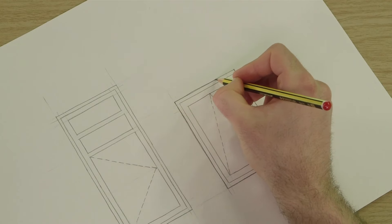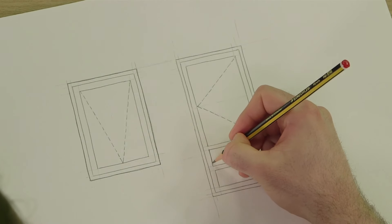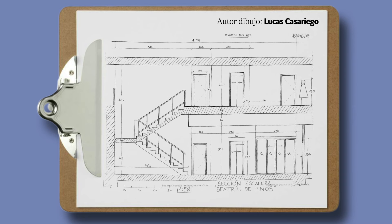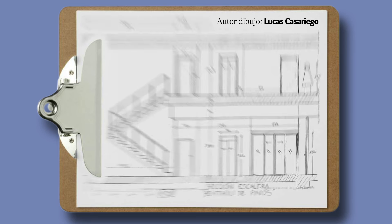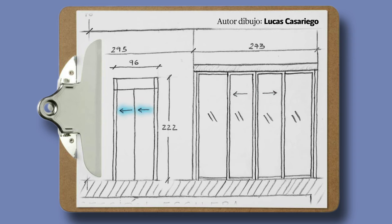En el caso de las ventanas pivotantes hemos de indicar el sentido de giro tanto si es horizontal como si es vertical. Si se trata de una ventana corredera o una ventana de guillotina habremos de indicar con flechas hacia qué lado se desplazan.